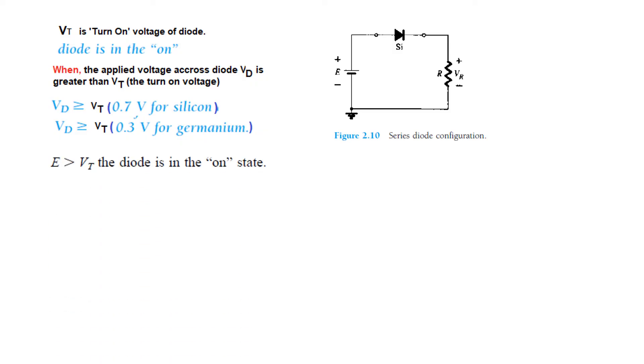Also, the supply voltage has to be greater than VT. Only then the diode will turn on.